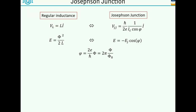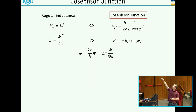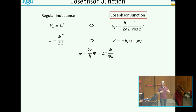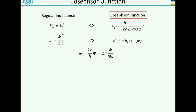Quick reminder: we have talked about the Josephson junction already. Here's a comparison to a regular inductor. The voltage across a normal inductor is proportional to the derivative of the current times the inductance. For the Josephson junction, I have a very similar equation but this time I have this nonlinear inductance up front. The energy for inductance is phi squared, whereas for the Josephson junction it's this cosine of the phase phi. There's a relation between the phase of the superconductor and the flux, so I can write this phase difference in units of flux quanta.